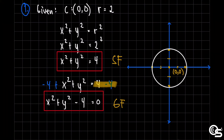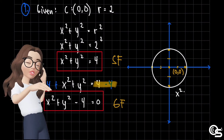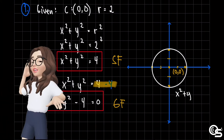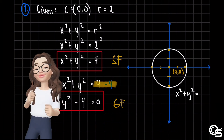Then we will indicate the name of the circle using the standard form: x squared plus y squared is equal to 4.